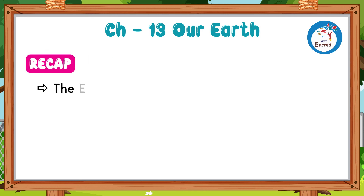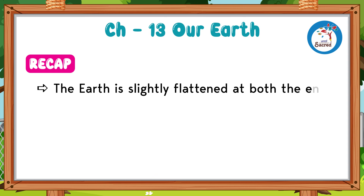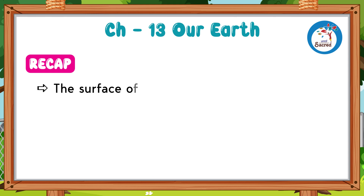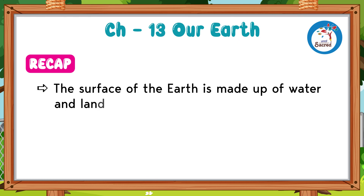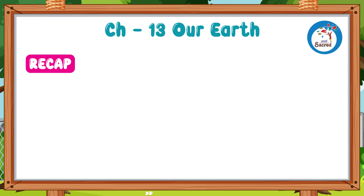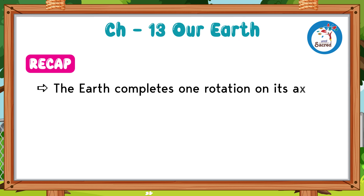Recap. The Earth is slightly flattened at both the ends. The Earth is surrounded by a layer of air called the atmosphere. The surface of the Earth is made up of water and land. The Earth is also known as the Blue Planet. The Earth completes one rotation on its axis in 24 hours.